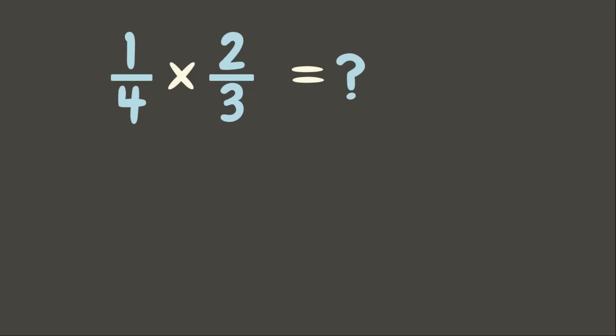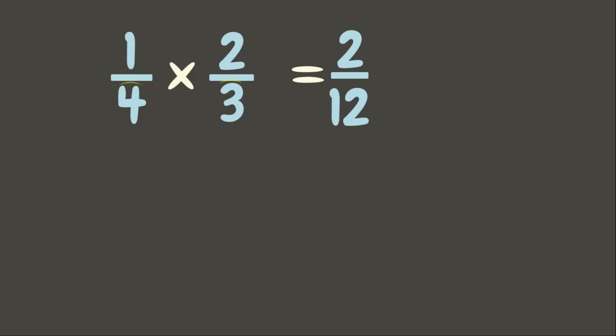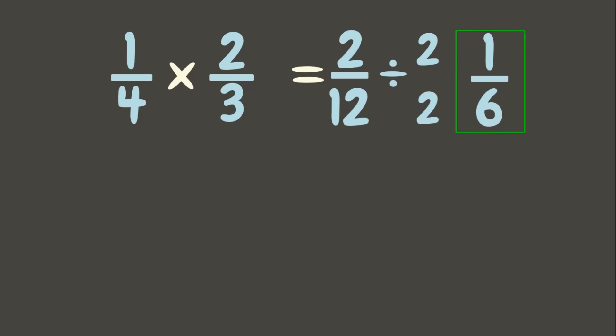1 times 2 is 2. 4 times 3 is 12. And then, let us simplify our answer. The common factor of 2 and 12 is 2. 2 divided by 2 is 1, and 12 divided by 2 is 6. Therefore, our final answer is 1 sixth.